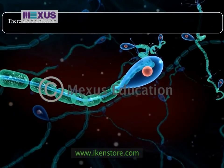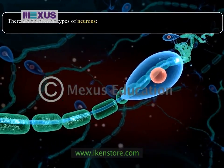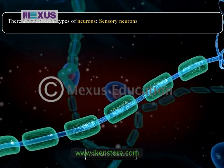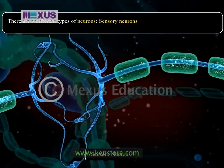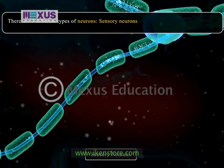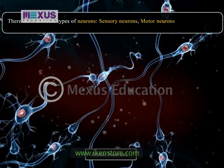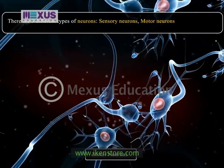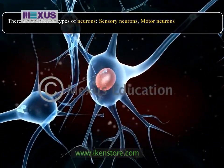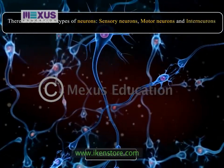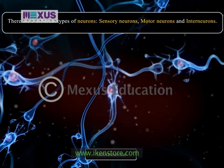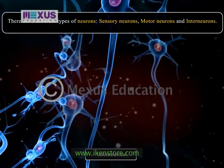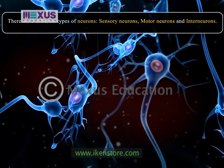There are three different types of neurons. The first is sensory neurons, which carry impulses from the sense organs to the central nervous system. The second type is motor neurons, which carry impulses from the CNS to muscles or glands of our body. The third type is interneurons, which connect various neurons within the brain and spinal cord and carry information between the motor and sensory neurons.